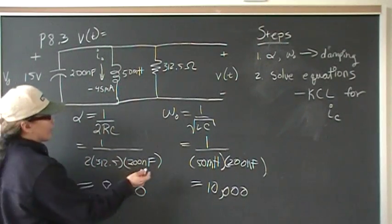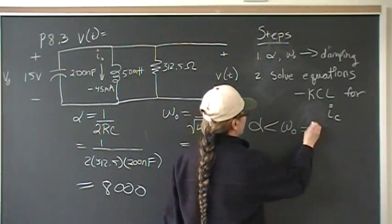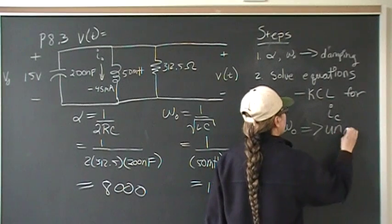So anyways, we have alpha is less than omega naught. Therefore, we're underdamped.